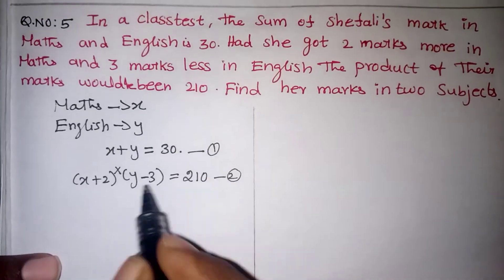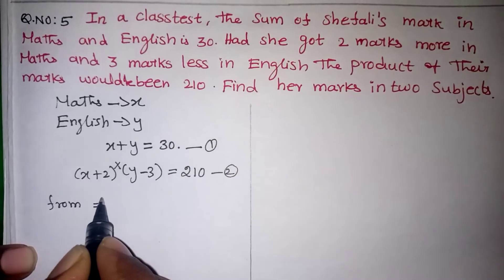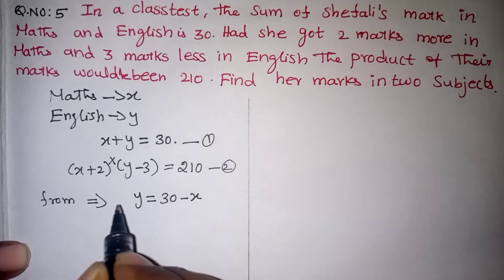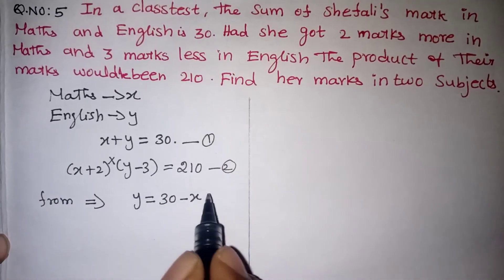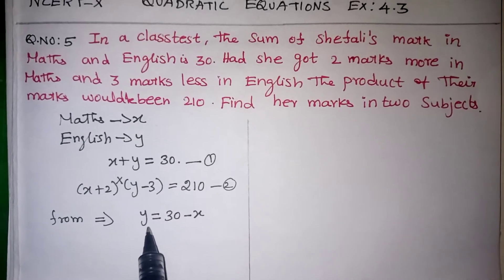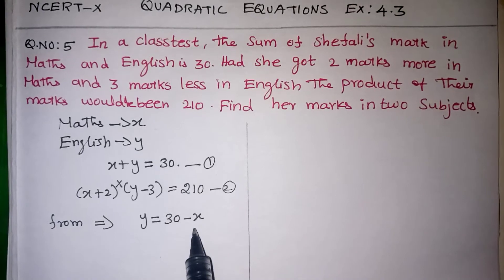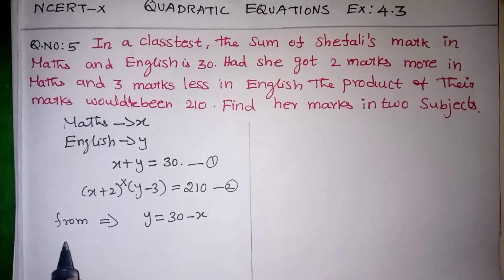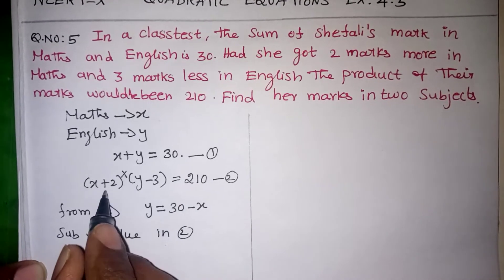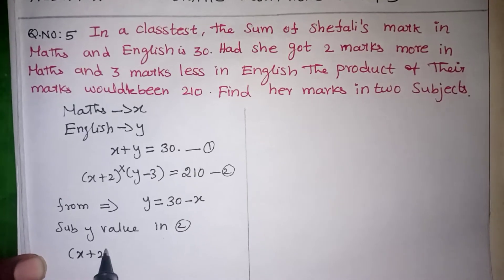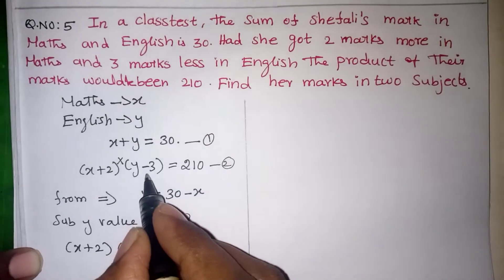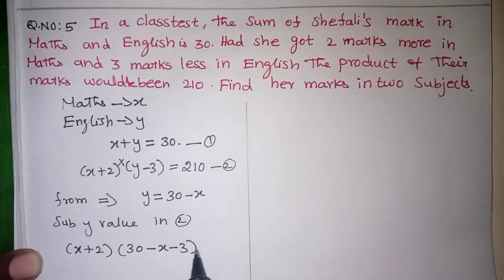From the first equation we are going to find Y. Y equals 30 minus X. We have to make all variables the same type to solve the problem — X and Y together can't give us one equation. That's why I am finding the Y value and substituting it in the second equation. So substitute Y equals 30 minus X in the second equation. We keep X plus 2 as it is, and in place of Y we substitute 30 minus X, and then minus 3. This equals 210.